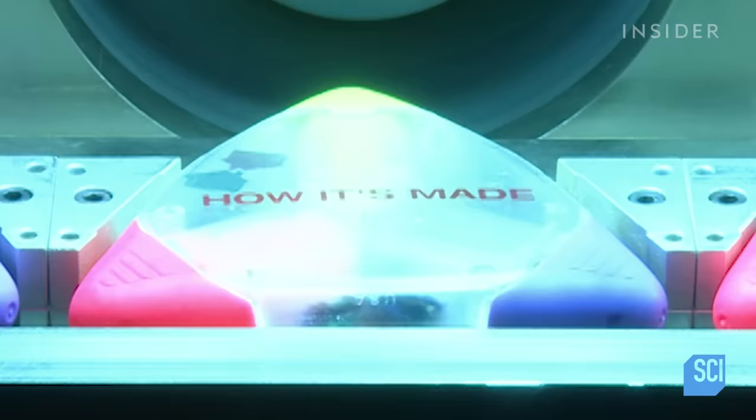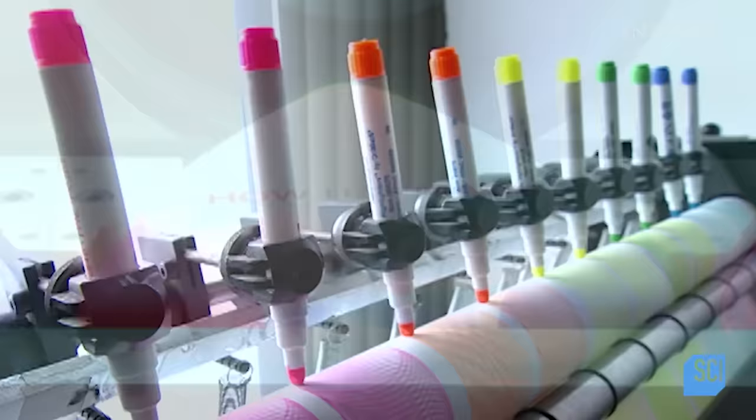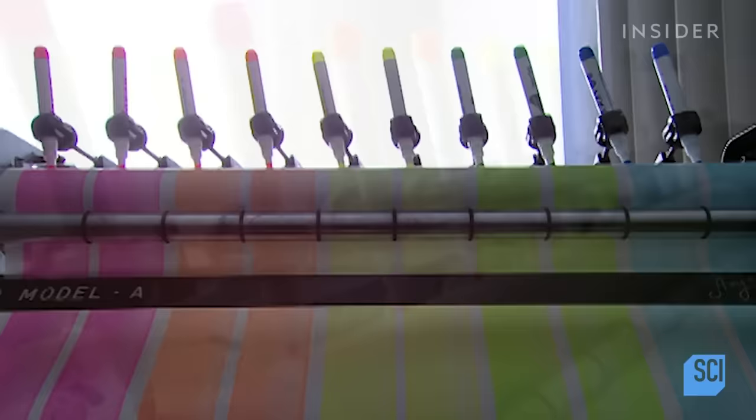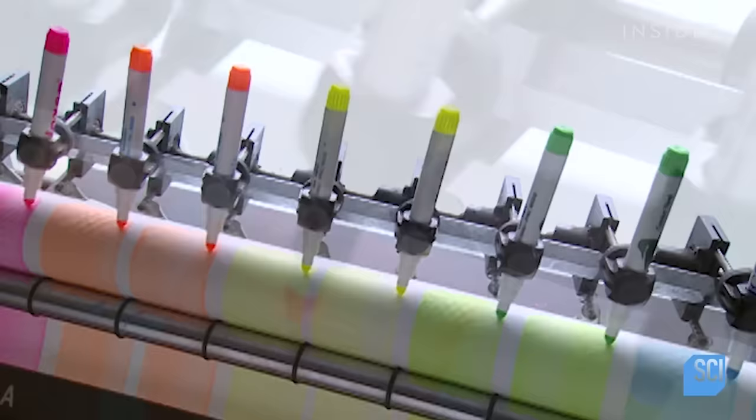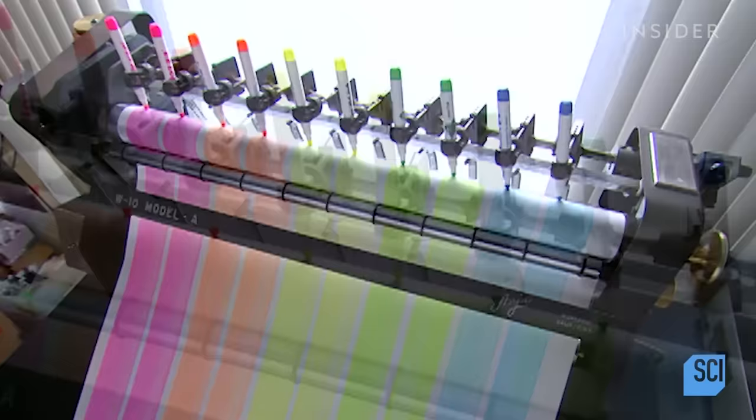Now the highlighters enter an ultraviolet light chamber. The light bonds the ink to the case. And finally, the ultimate test: plastic grippers guide markers as they make circles. Seven hundred to a thousand circles means this particular production line will definitely stand out.